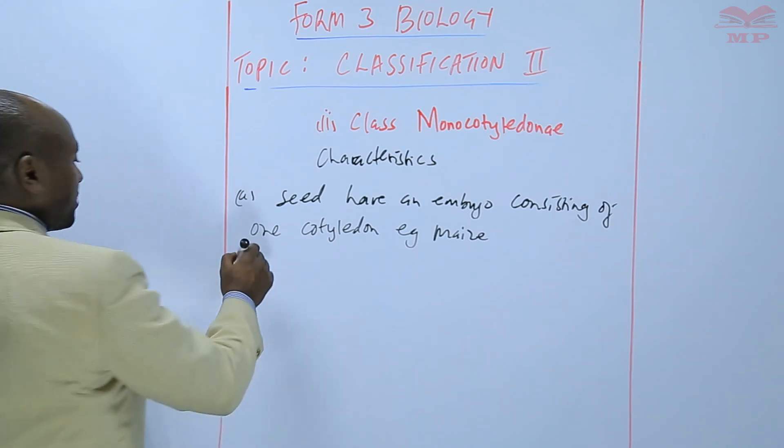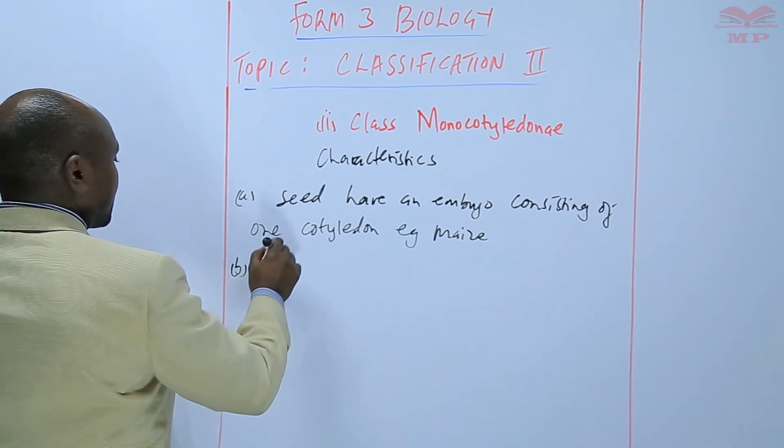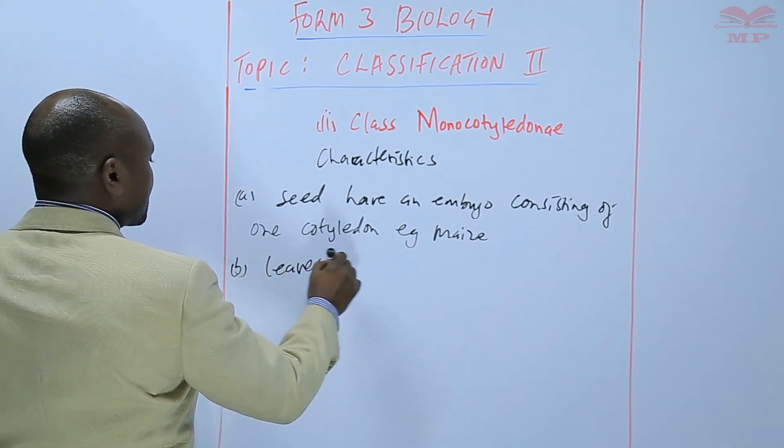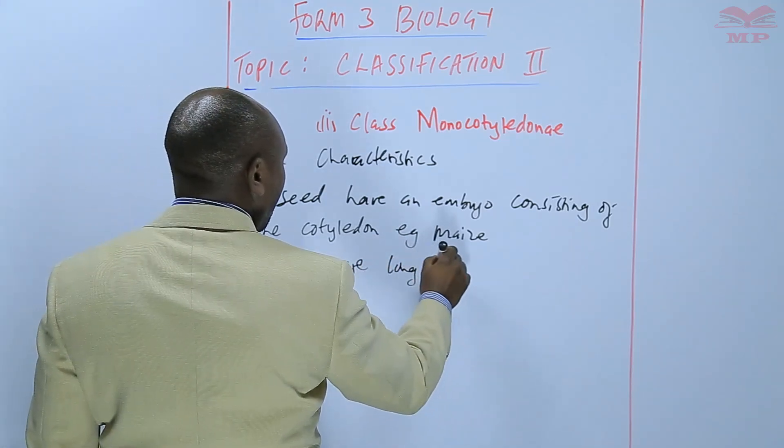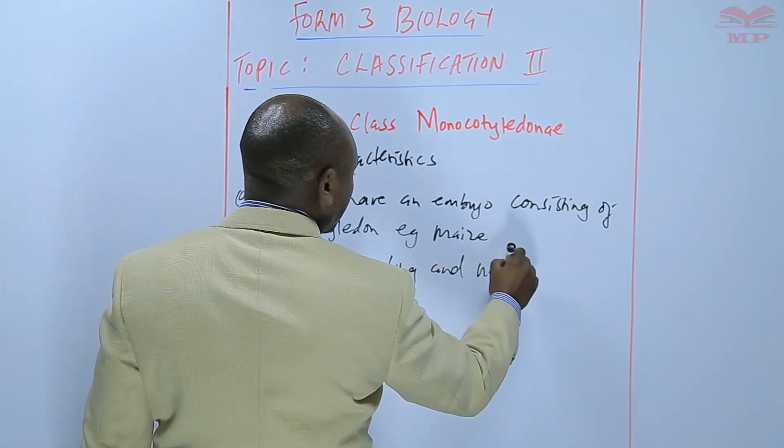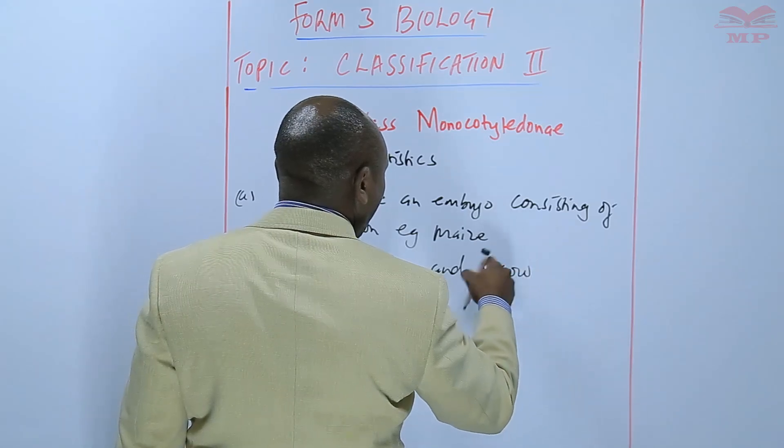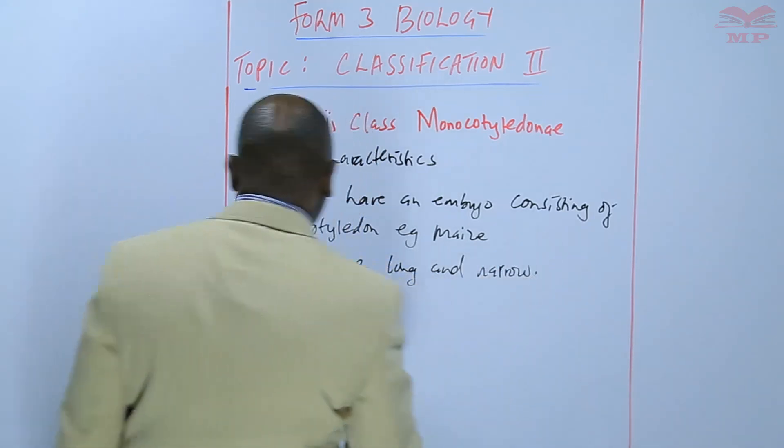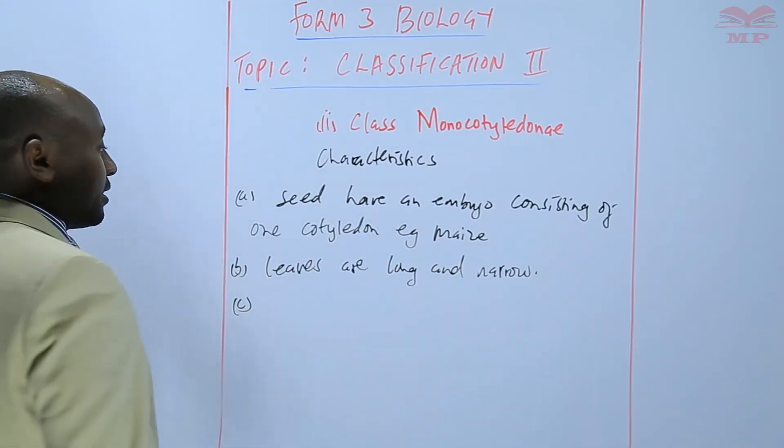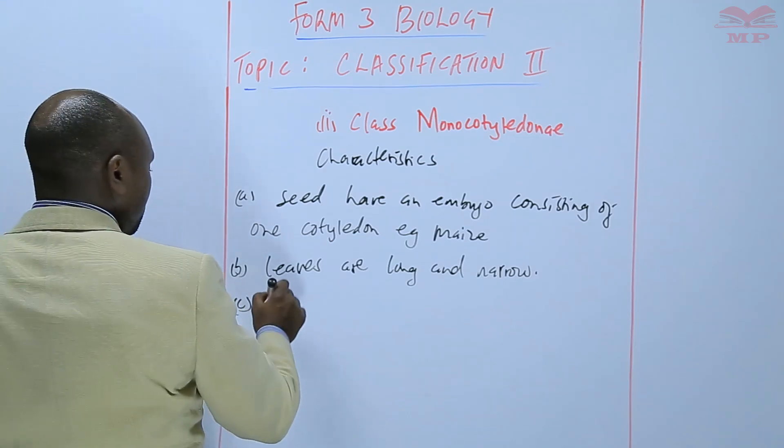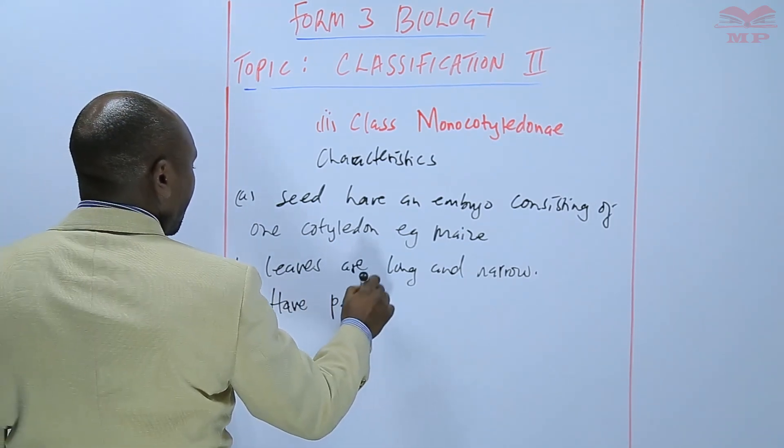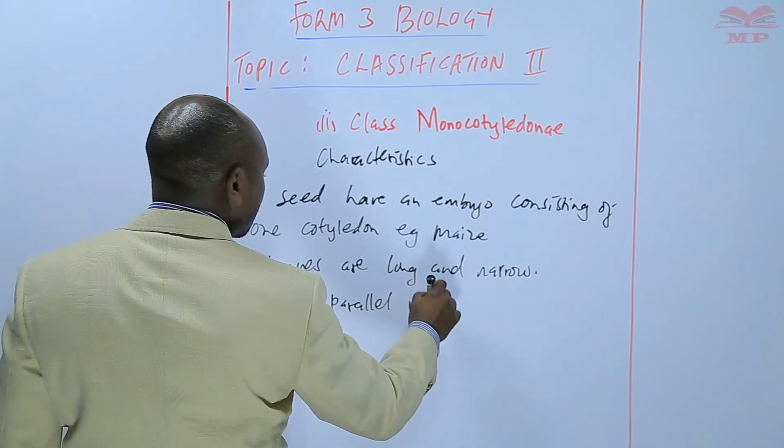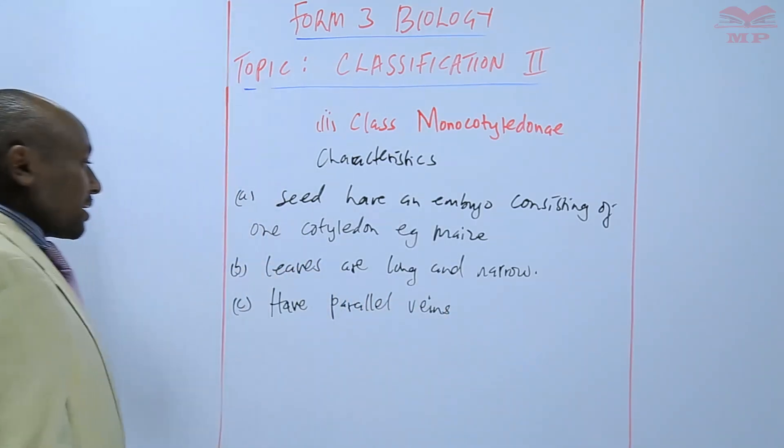You can also distinguish them in terms of the leaves. The leaves are long and narrow. In terms of the venation type of veins, they have parallel veins.